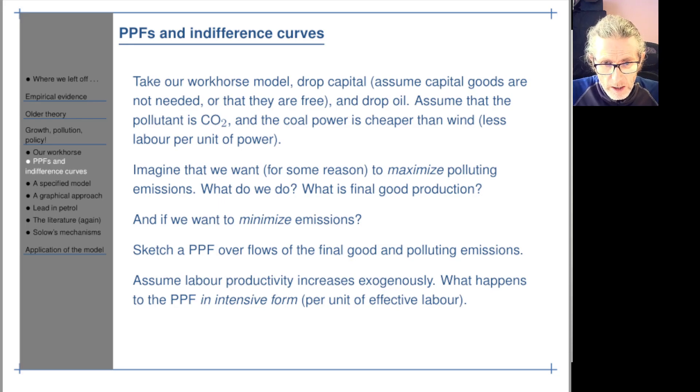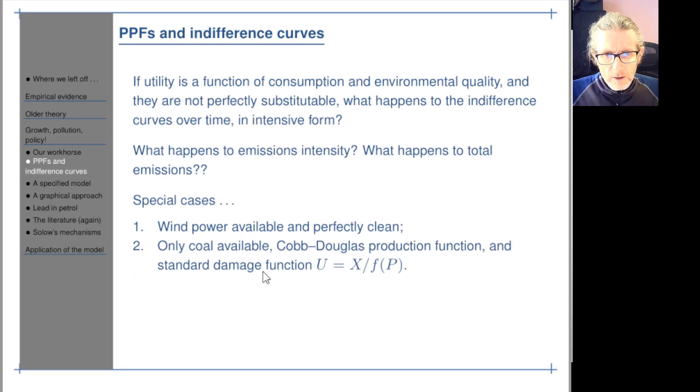Assume labour productivity increases exogenously. What happens to the PPF? It moves out. But if it's labour productivity increasing, it turns out that in intensive form, per unit of effective labour, nothing's happening. Labour productivity increases per unit of effective labour, which is labour productivity times labour. Nothing happens. This curve is going to stay exactly where it is in intensive form.